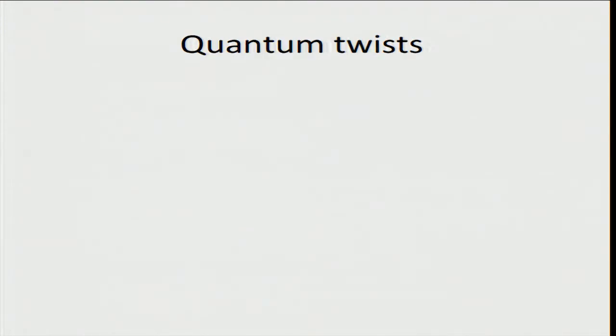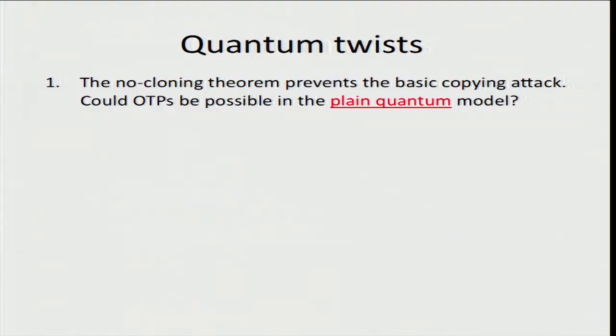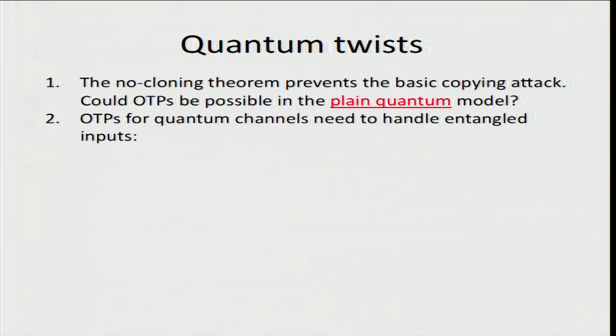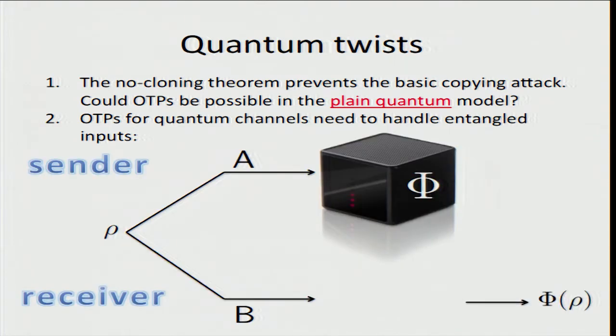When we move to the quantum setting, several twists arise. First, there's the no-cloning theorem, which says that an unknown quantum state can't be copied, and this rules out the basic copying attack we saw before. So we might wonder if one-time programs are possible using quantum information. Second, one-time programs for quantum channels would need to handle entangled inputs. So we can have a sender and receiver with a joint entangled input state A and B, and we want our one-time programs for quantum channels to be both correct and secure when the sender and receiver have entangled inputs.